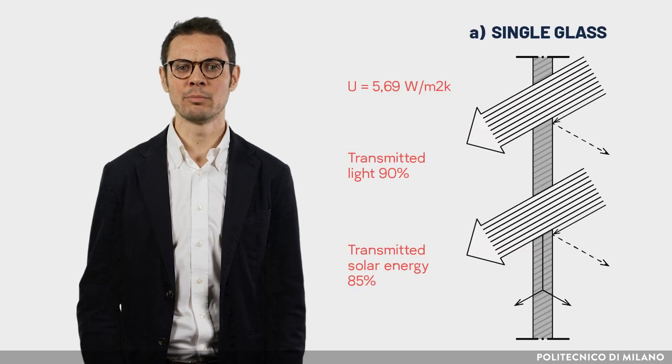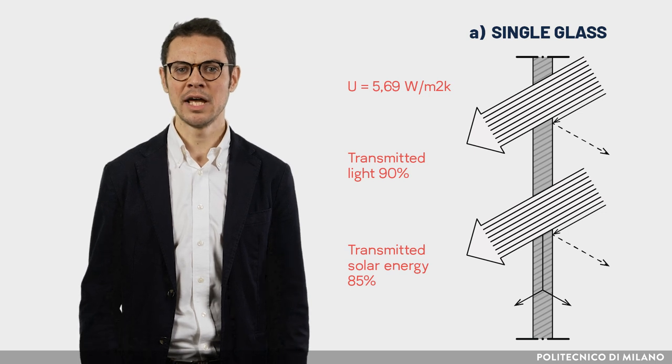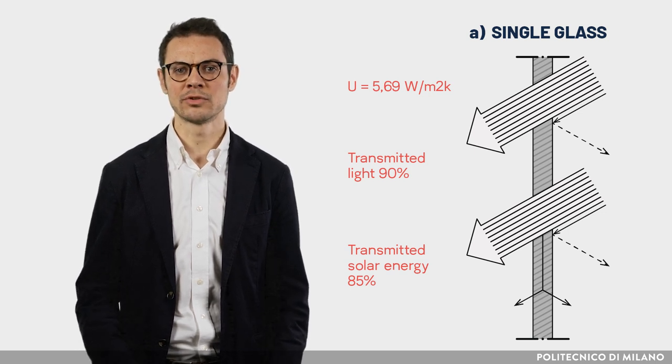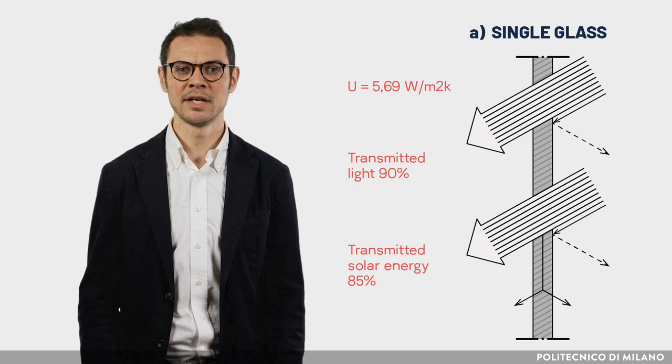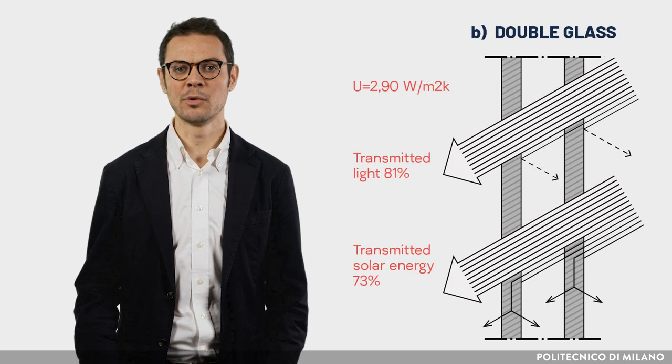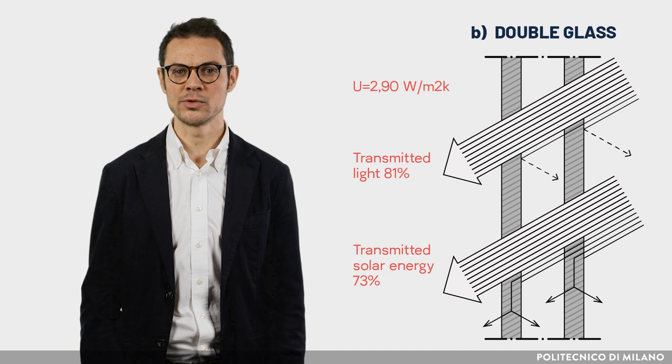Depending on the type of glass, the window is crossed in different ways by solar radiation, which can be considered both from the energy and from the light point of view. For example, generally a single glazing component is characterized by transmission in the visible spectrum and in the solar one of about 90% and 85%, respectively, while a double glazing has lower values.